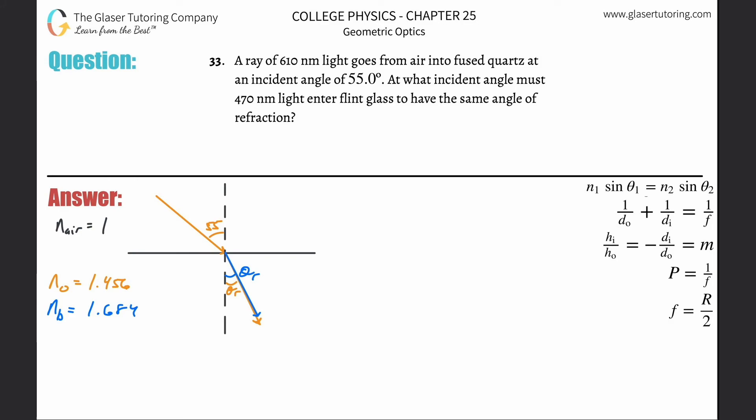Number 33: A ray of 610 nanometer light goes from air into fused quartz at an incident angle of 55 degrees. At what incident angle must 470 nanometer light enter flint glass to have the same angle of refraction? First thing you got to know: 610 nanometer light is orange and 470 nanometer light is blue.